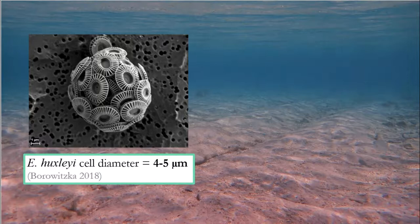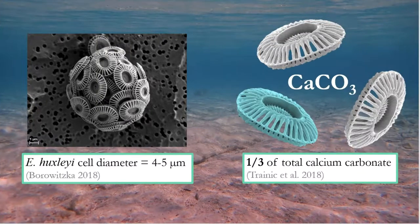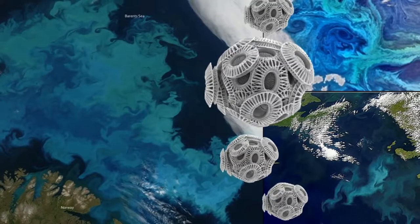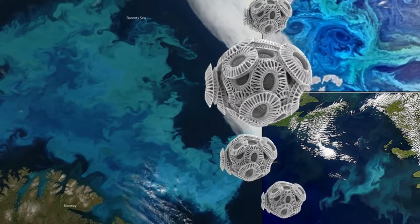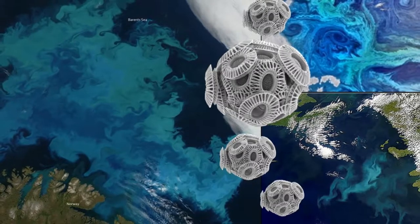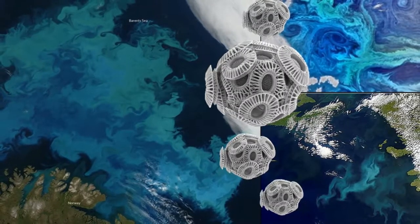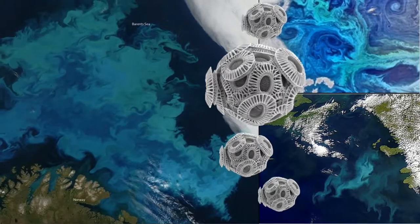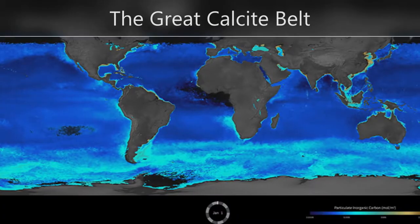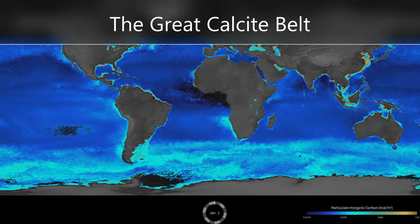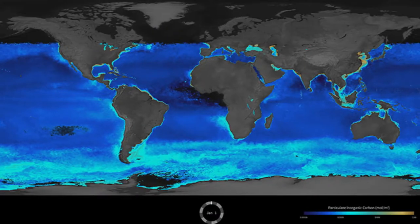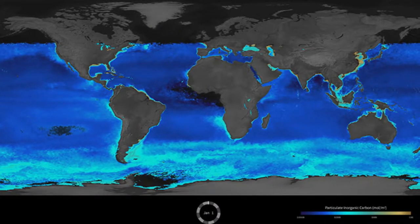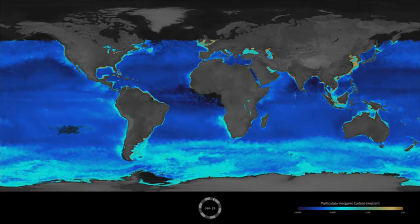E. huxleyi produces approximately one third of the total calcium carbonate produced in the marine environment. The oceanic algal blooms of E. huxleyi are the largest, forming blooms visible from space. An example of these extensive coccolithophore blooms is the Great Calcite Belt, a band of bright, reflective water in the southern ocean which occurs every year during the southern hemisphere summer.